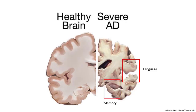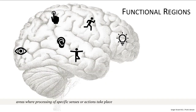In the brain of an Alzheimer's patient, there is a dramatic reduction in brain mass. The deep cracks formed by the sulci are much more prominent, and regions associated with memory, language, and sometimes smell are severely affected.